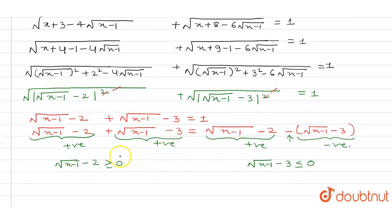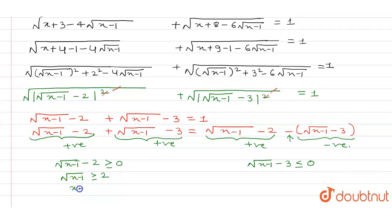By combining both equations, I first solve them alone. I write: √(x − 1) ≥ 2. Squaring both sides, x − 1 ≥ 4. Adding 1 to both sides, x ≥ 5.